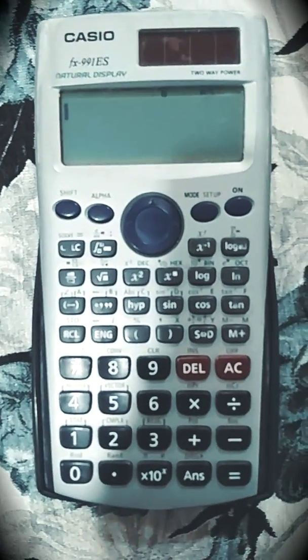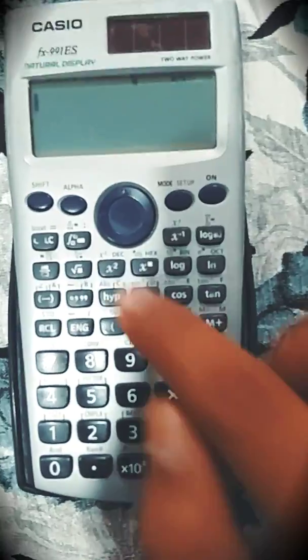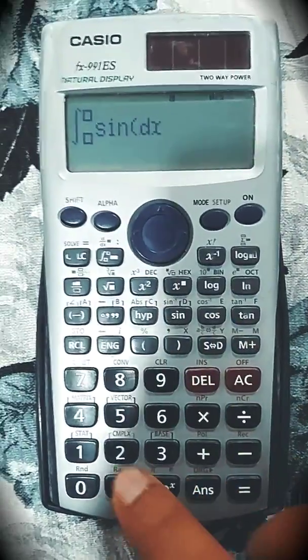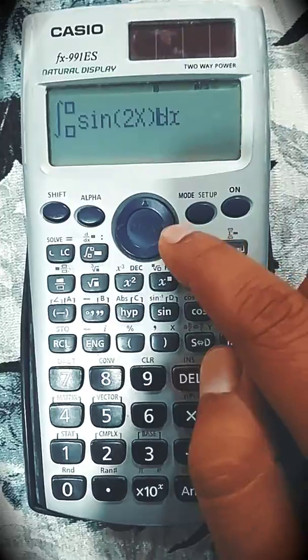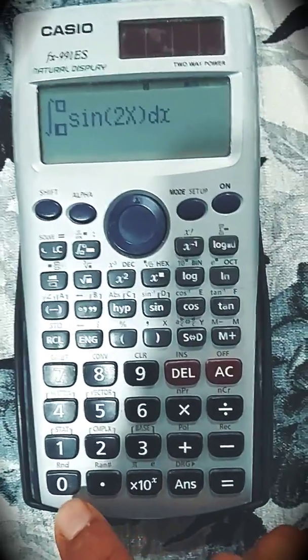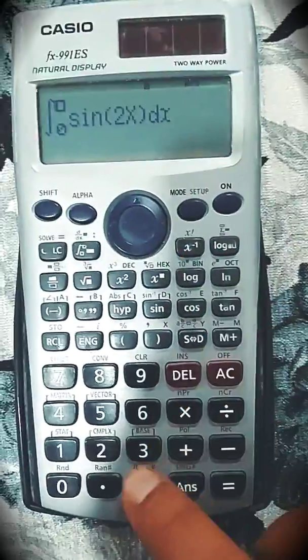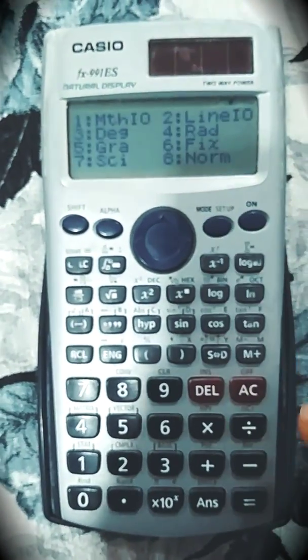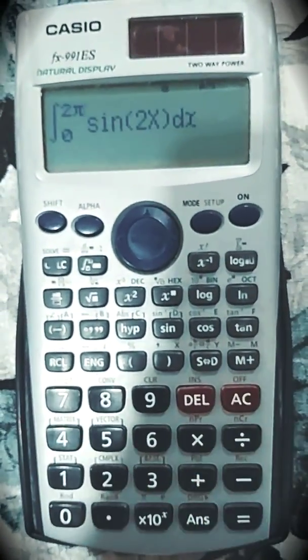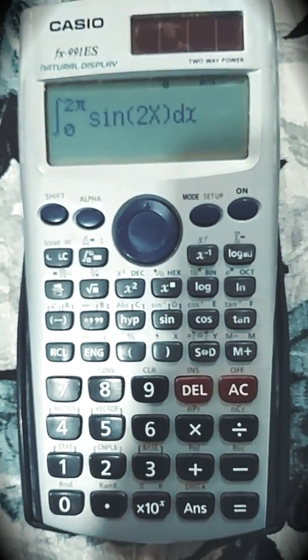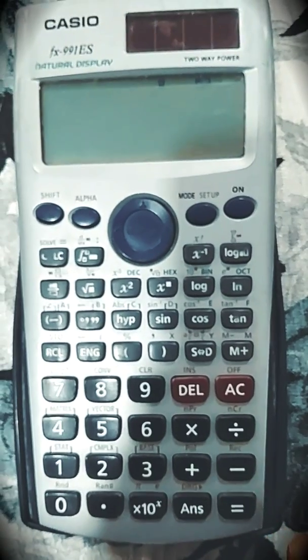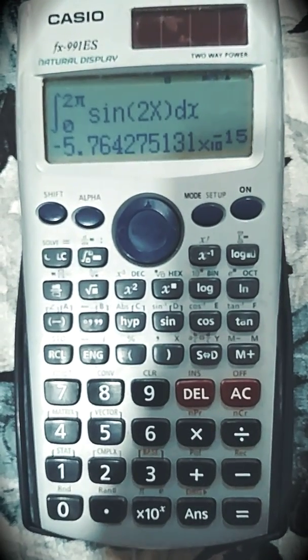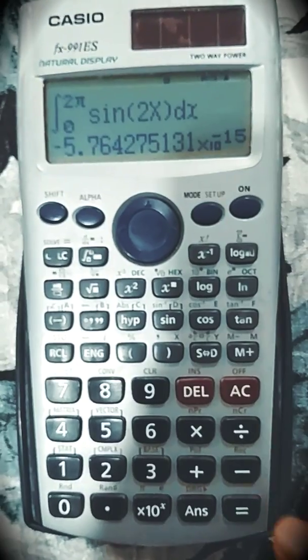Now we will see how to find out integration of any function using this calculator. So here you can find the integration button. Press this, insert the function. Let's take sin 2x. Bracket complete, side button. Now it is asking for the limit. Let's take 0 to 2 pi. Before doing that, change the mode. Shift mode, you should be at radian mode whenever you are doing trigonometric operation. So now just press equal to. You will get the answer. So this will be the answer.